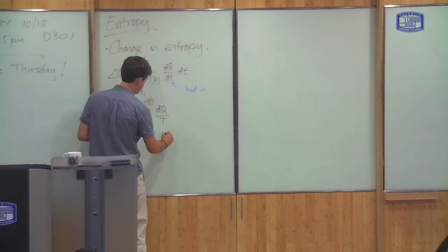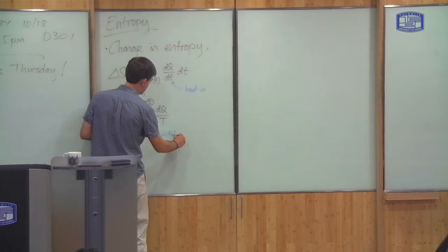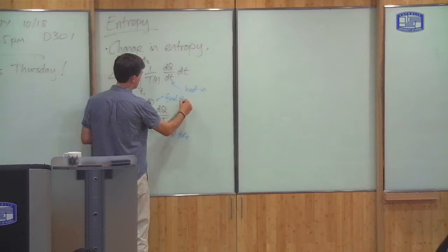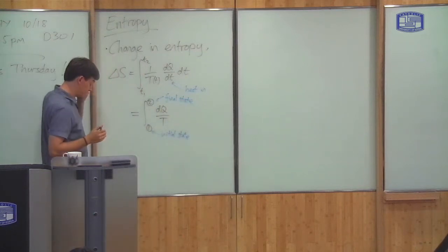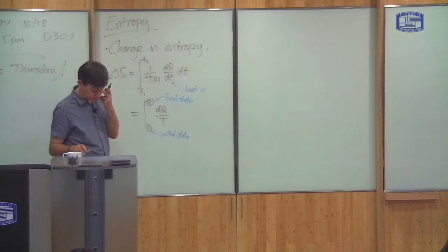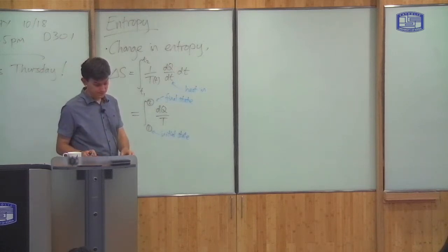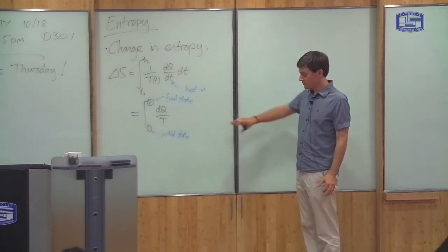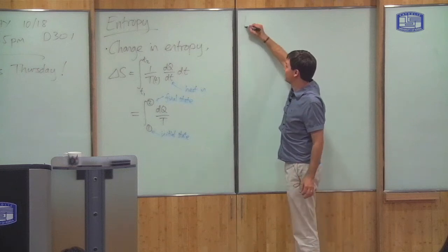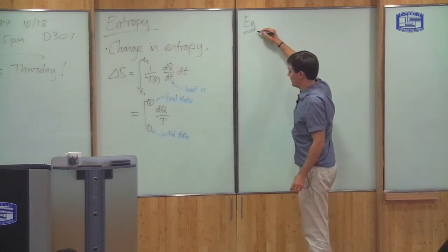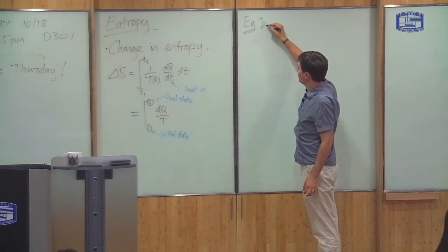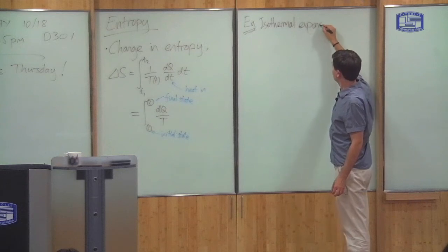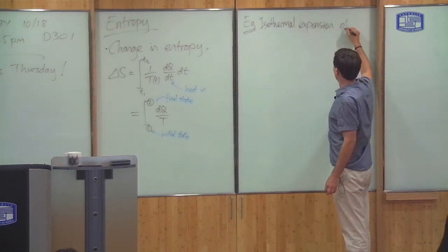Here, one denotes the initial state and two denotes the final state. Let me give you a very simple example to illustrate this: calculate the change in entropy for an isothermal expansion of the ideal gas.